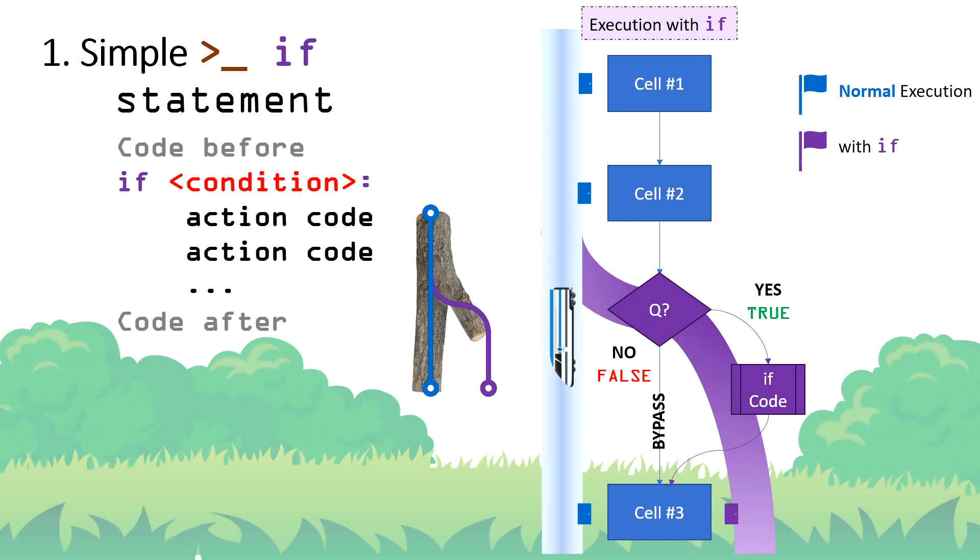That's what we call bypass, because in this situation our program will bypass or ignore if code and just do nothing but proceed to the next code cell. This is exactly the case of Little Red Riding Hood when she found the answer is no to her question of am I allowed to stop to buy some ice cream. That is why she decided to do nothing but bypass or ignore the ice cream truck and proceed with her trip to her granny, which is her next code cell.